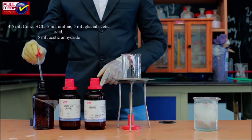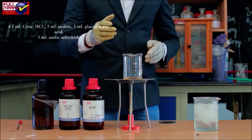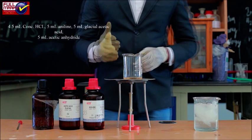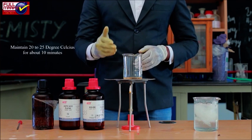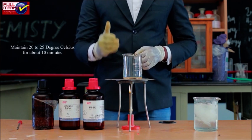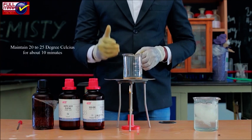Add 5 ml acetic anhydride into the aniline and HCl solution. Maintain the temperature of the flask between 20 to 25 degrees Celsius.